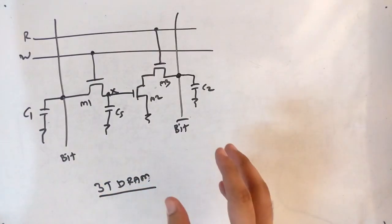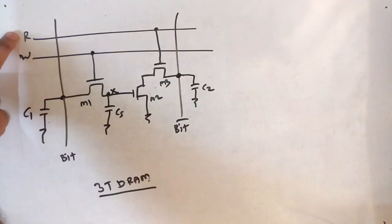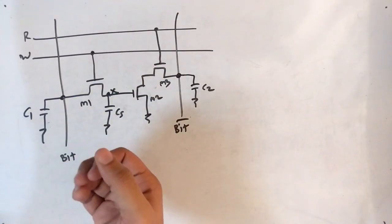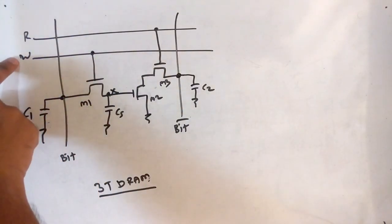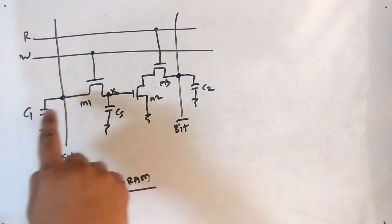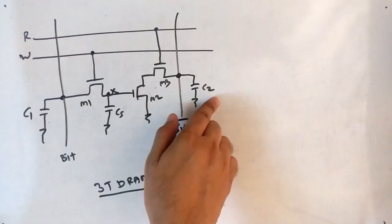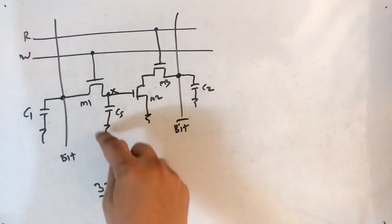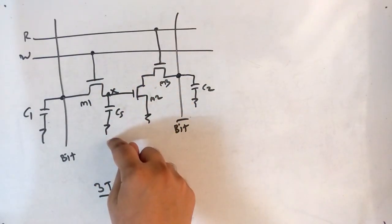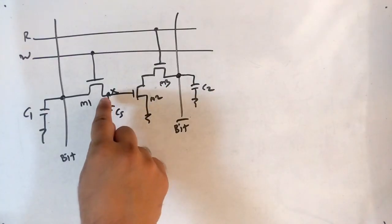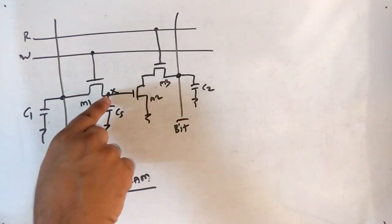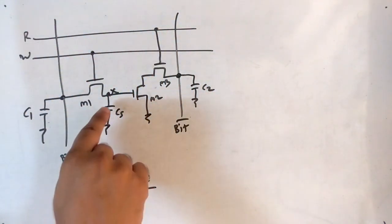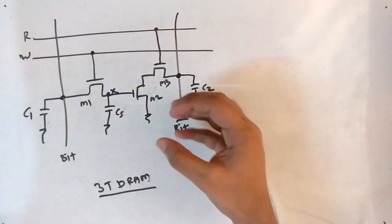The bit and bit-bar lines can act as input lines or output lines. Then we have the read and write lines, which are similar to word lines — they can be 1 or 0. Then we have the pre-charge capacitors, which are already charged. And we have the capacitor CS, which is the main part of the memory — we are going to write here and read from here.